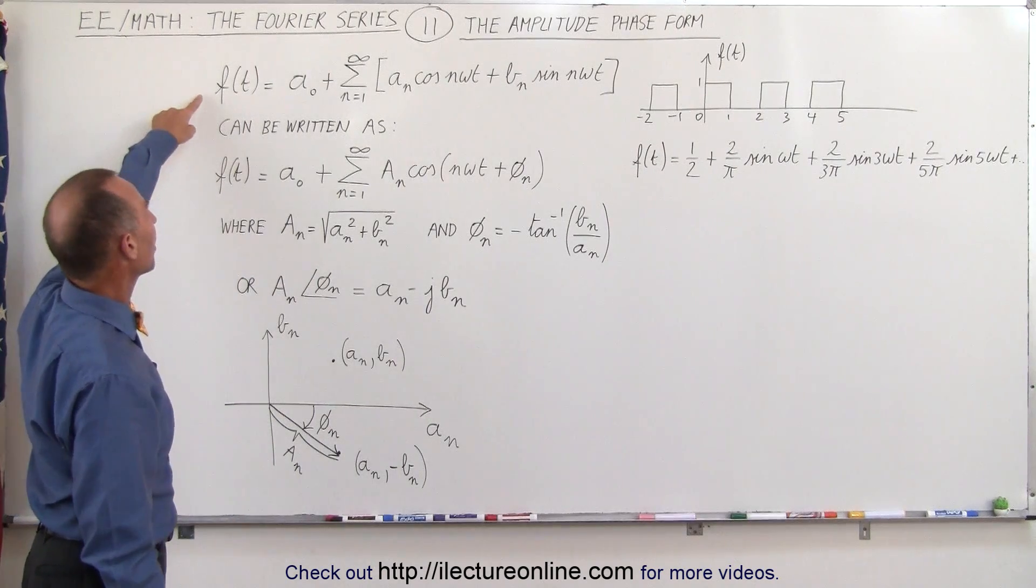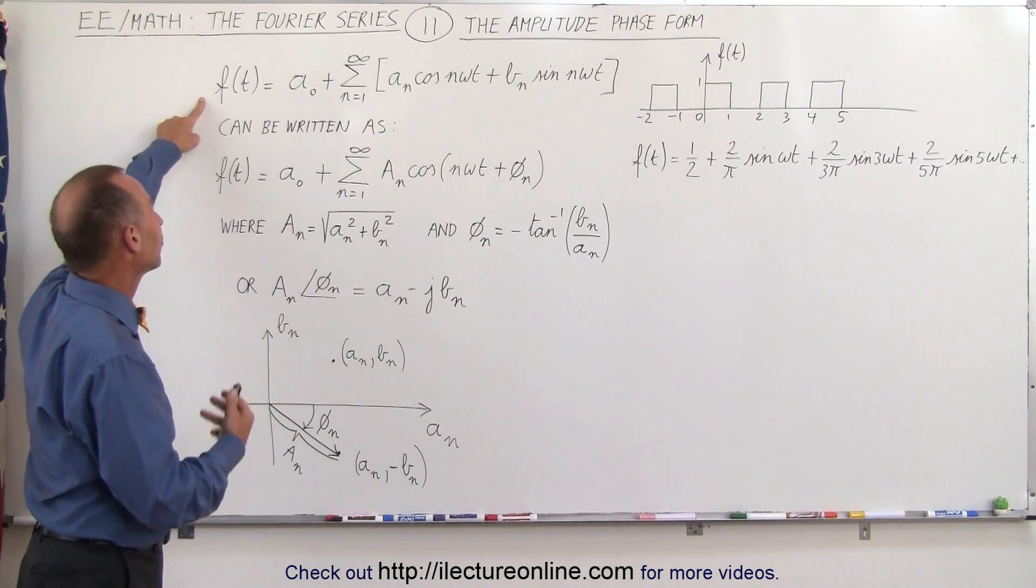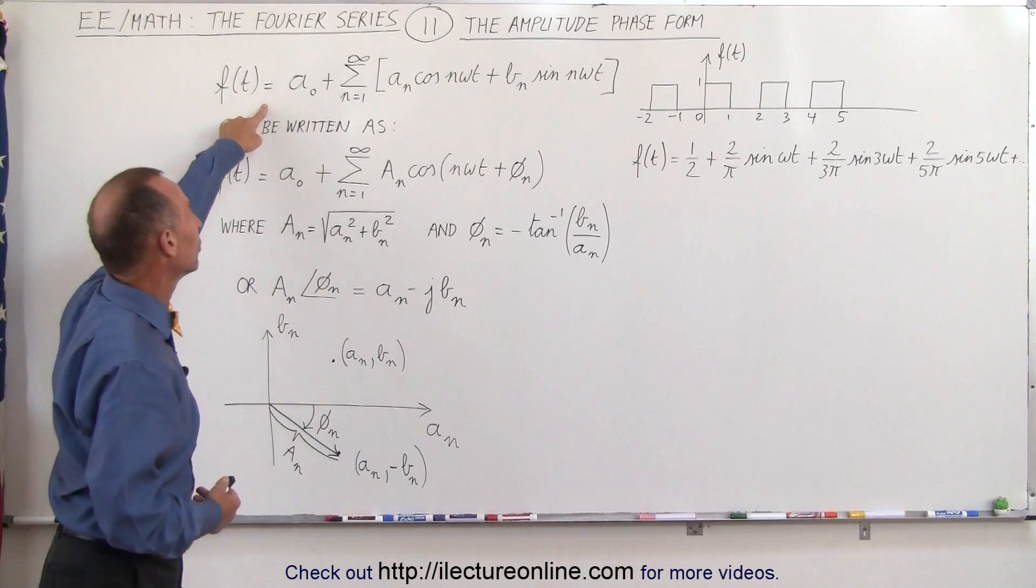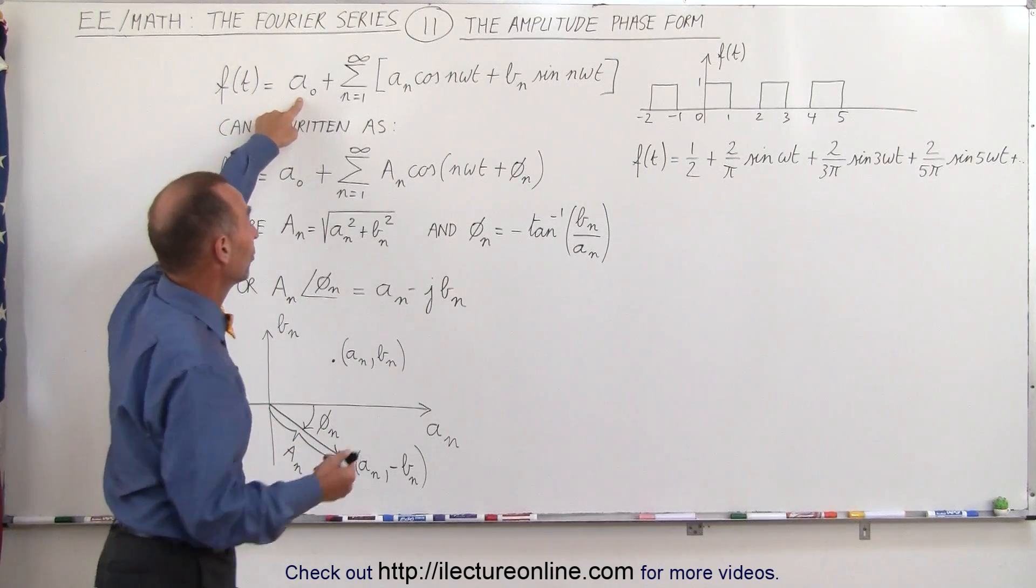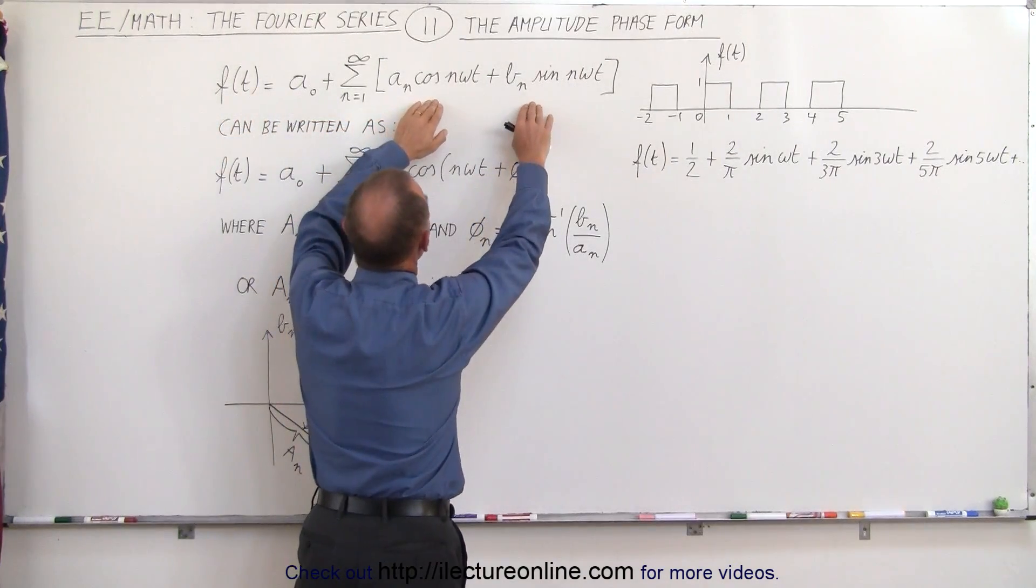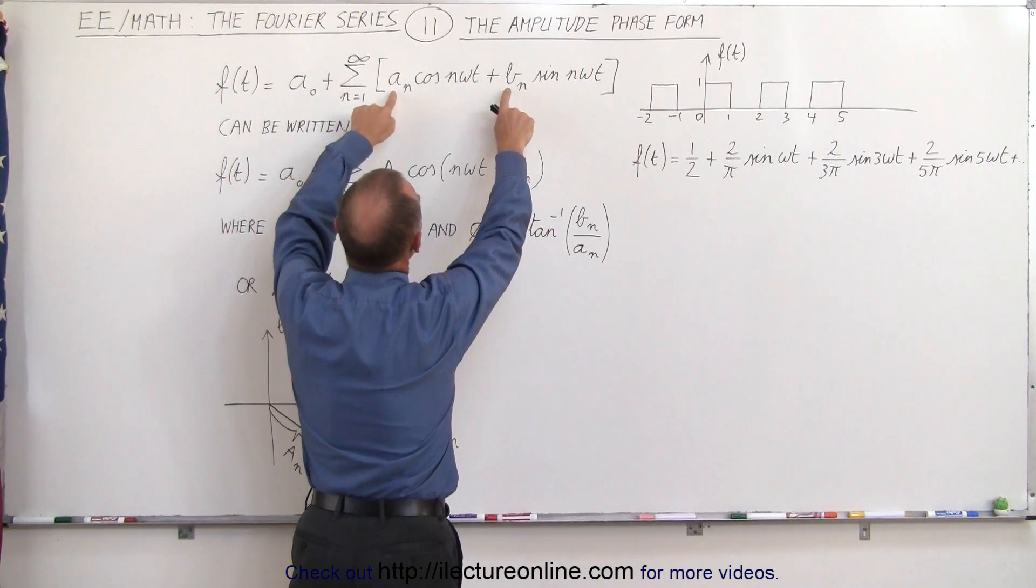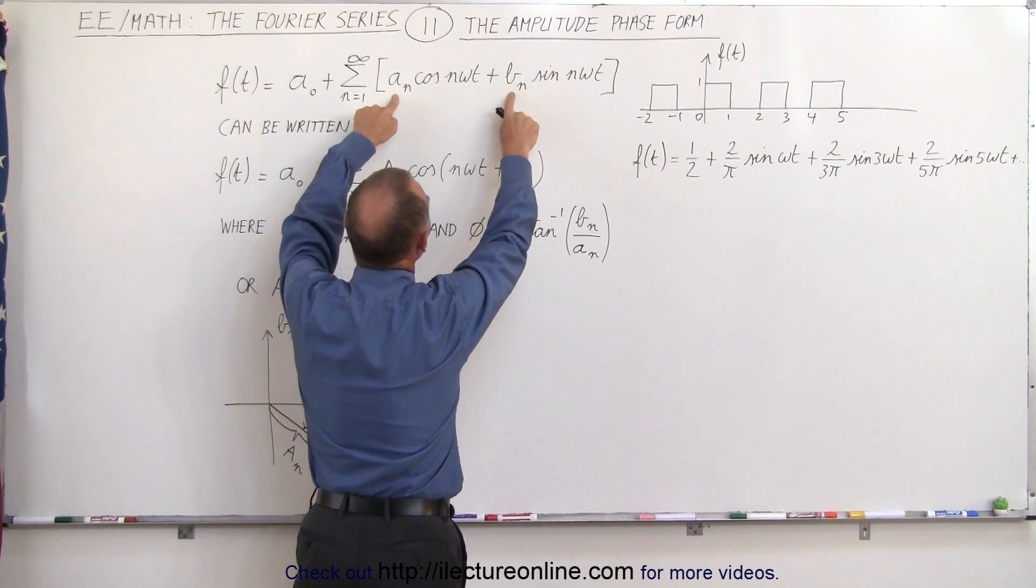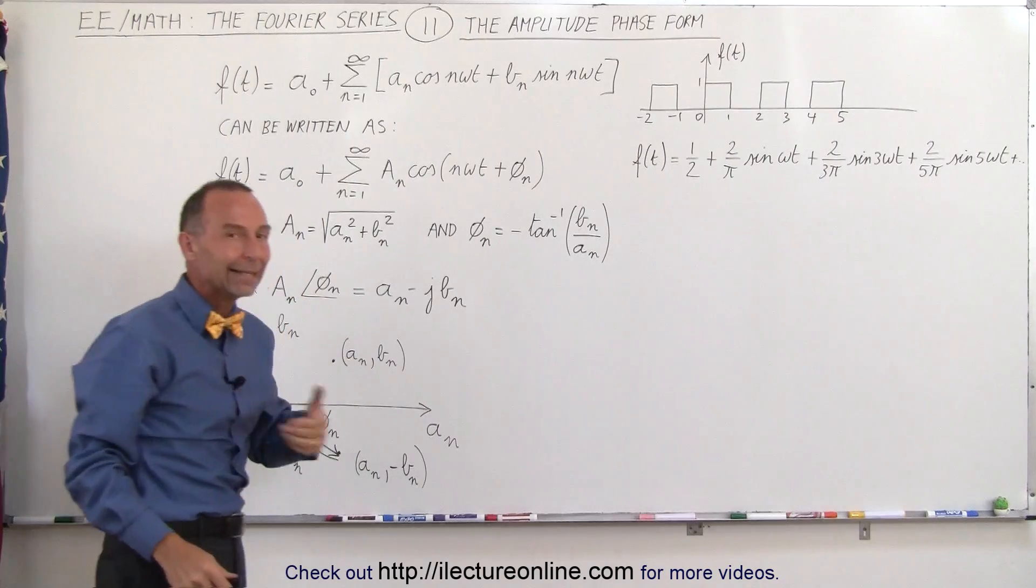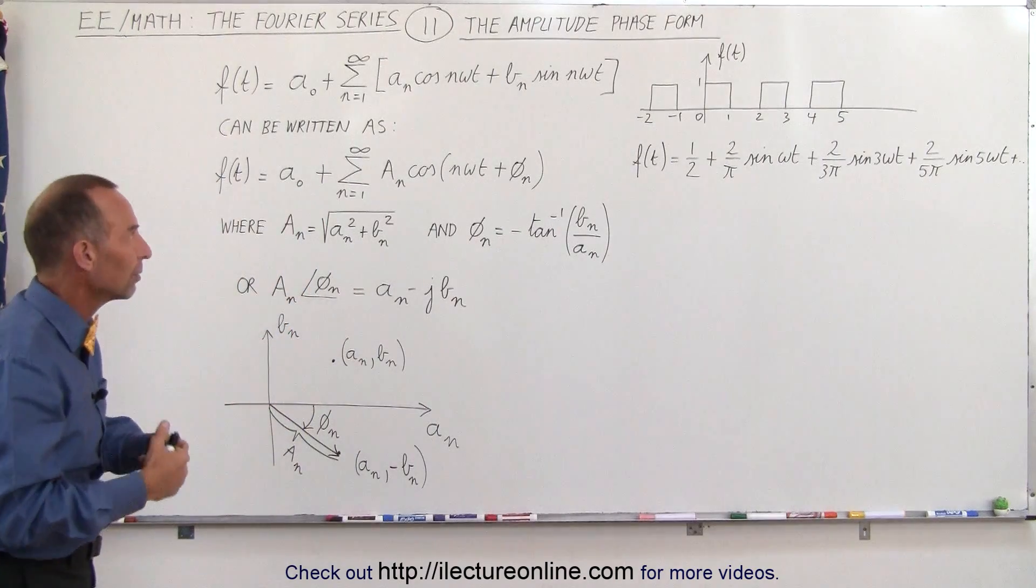This is the equation that we use to find the Fourier series. The periodic function is equal to a sub-naught, which is a DC term, plus two AC terms, each having their own constants a sub-n and b sub-n, which of course depend upon n. As n changes, each of those constants keeps changing.